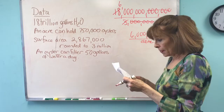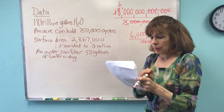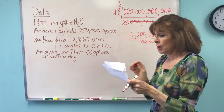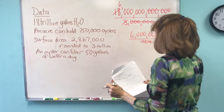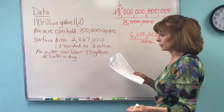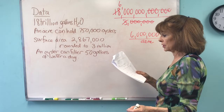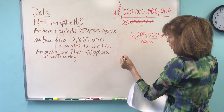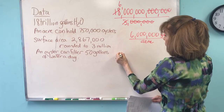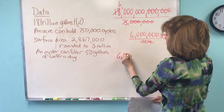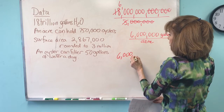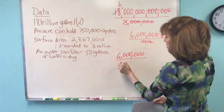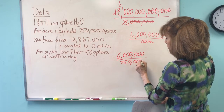Now, at its maximum, an acre can hold 750,000 oysters. So if you want to know how many gallons per oyster, you've got 6 million and you're dividing it by 750,000.